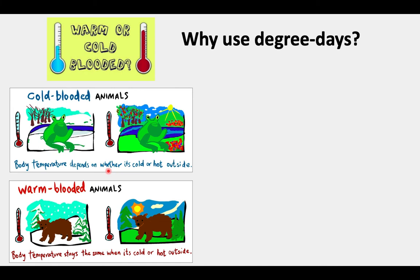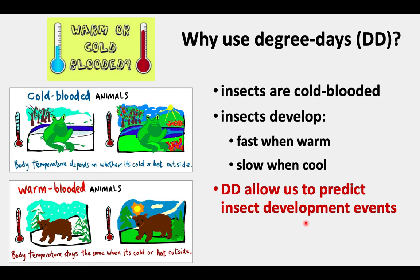Cold-blooded animals are those where the body temperature depends on whether it's cold or hot outside, in contrast to warm-blooded animals where their body temperature stays the same. Insects, like frogs, are cold-blooded. That means that insects develop fast when it's warm and slow when we have cooler temperatures. So degree days allows us to predict insect development events.